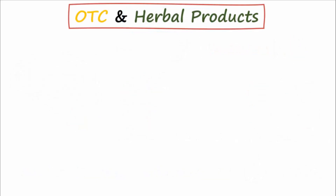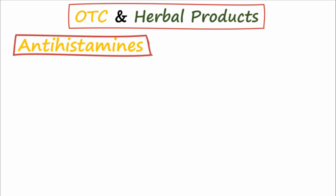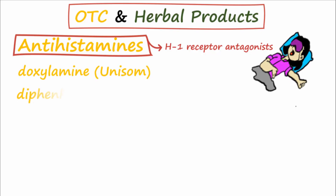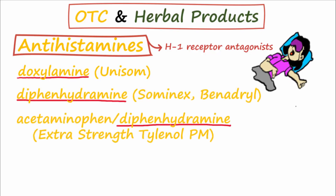There are a number of over-the-counter and herbal supplements available as hypnotic drugs. These include antihistamines, or H1 receptor antagonists. Since histamine is stimulatory in the brain, blocking it has a CNS-depressing effect and makes one sleepy. Common medications in this category include doxylamine and diphenhydramine. Two herbal products popular for their anti-anxiety and sleeping aid effects are kava and valerian.